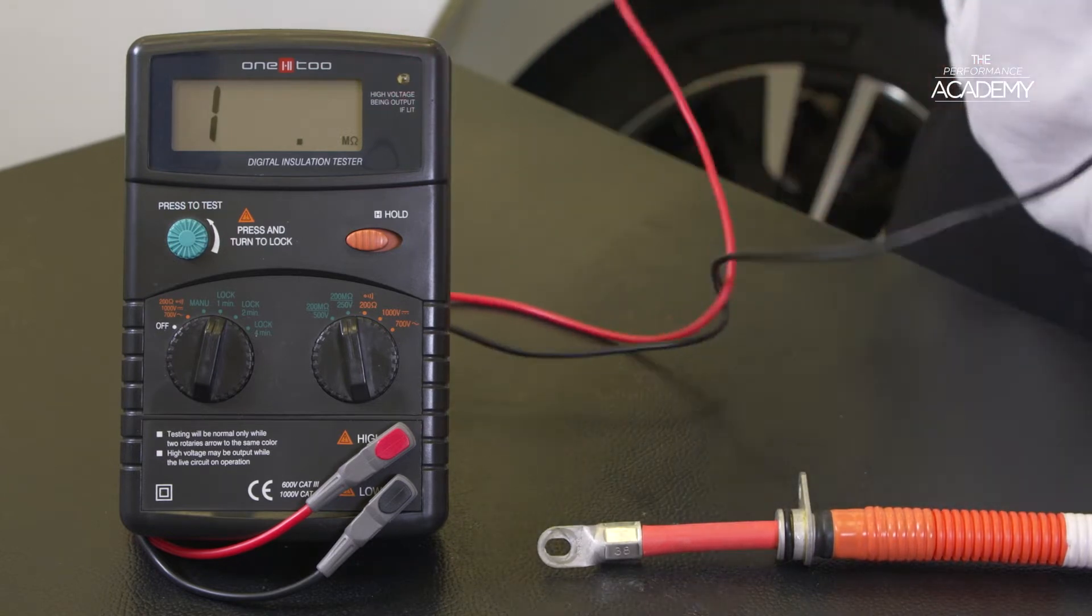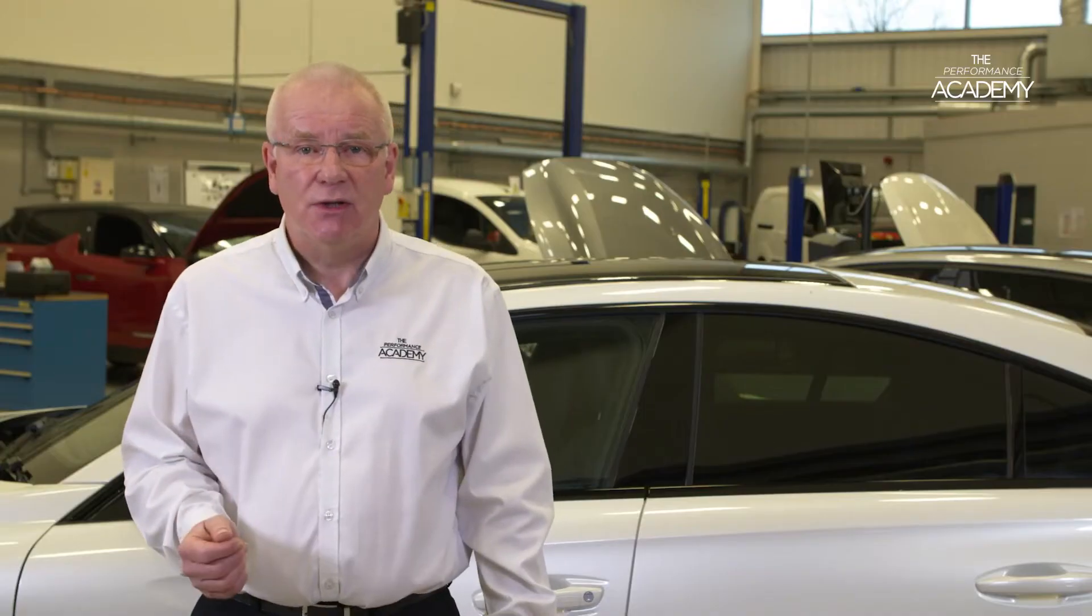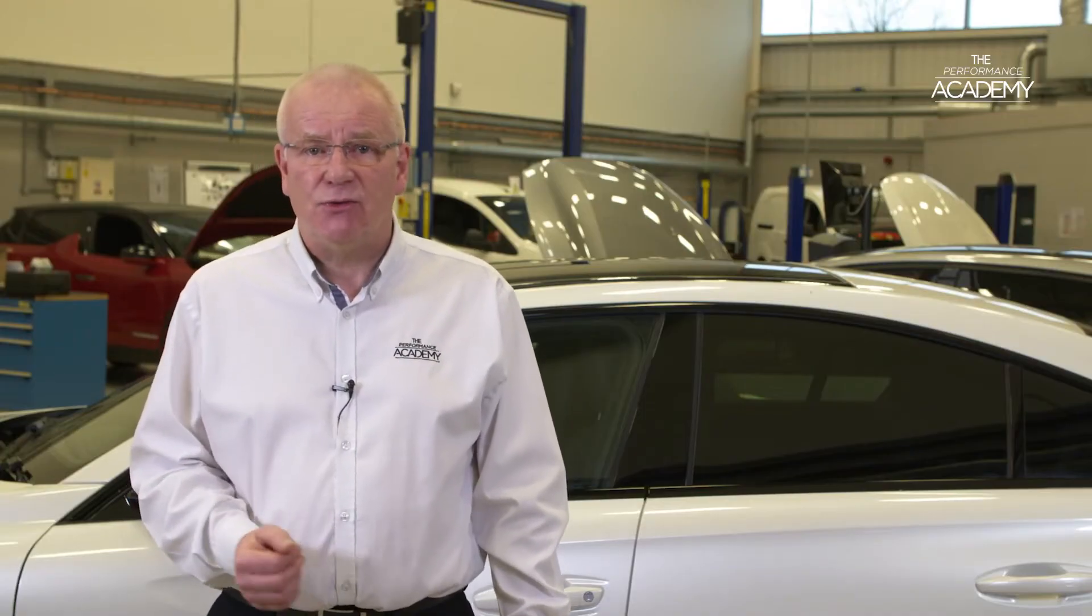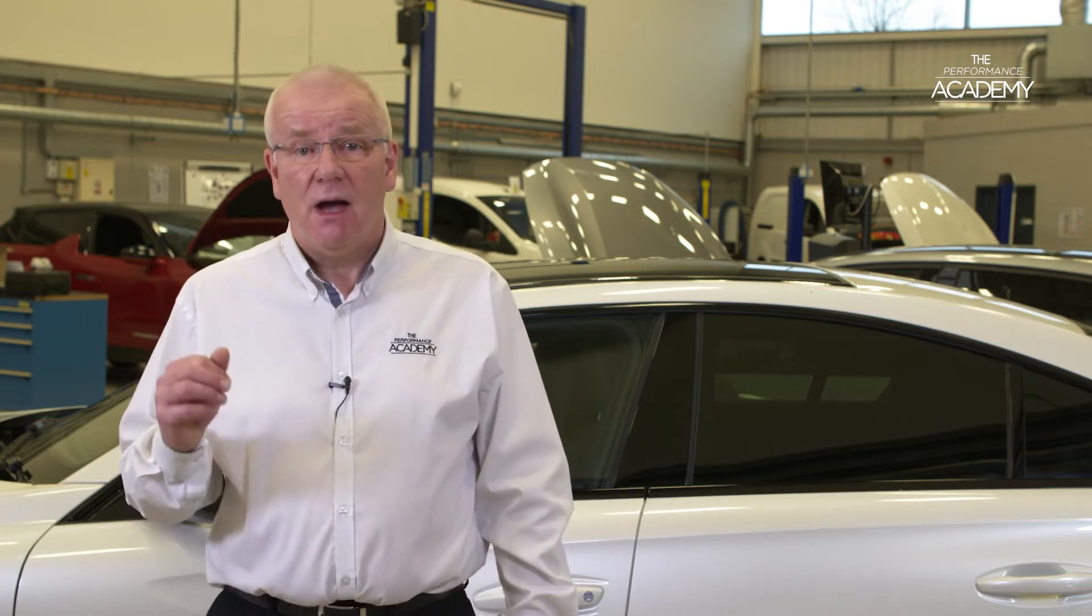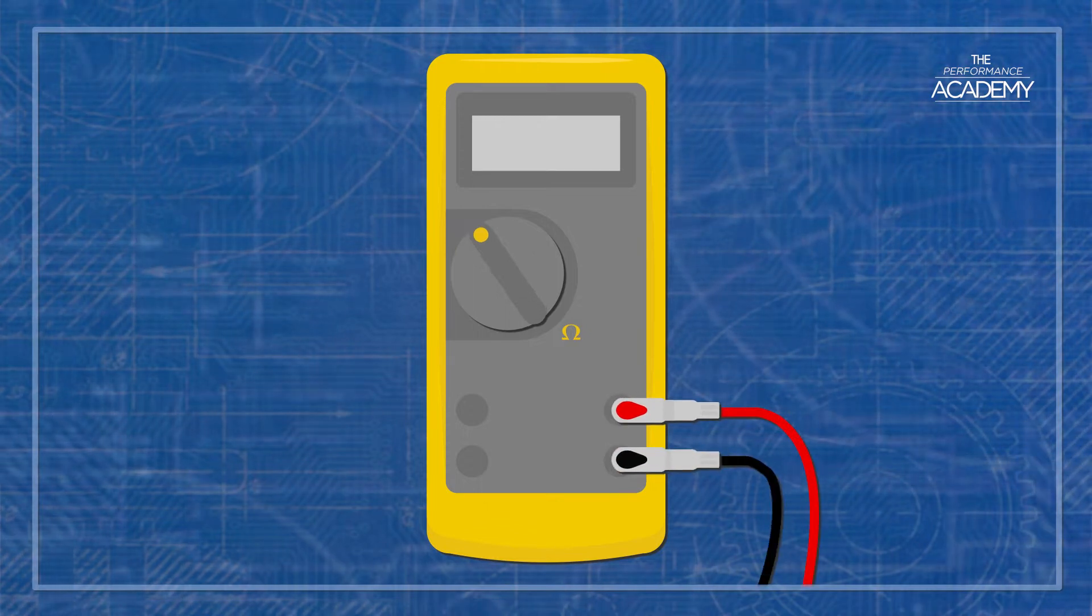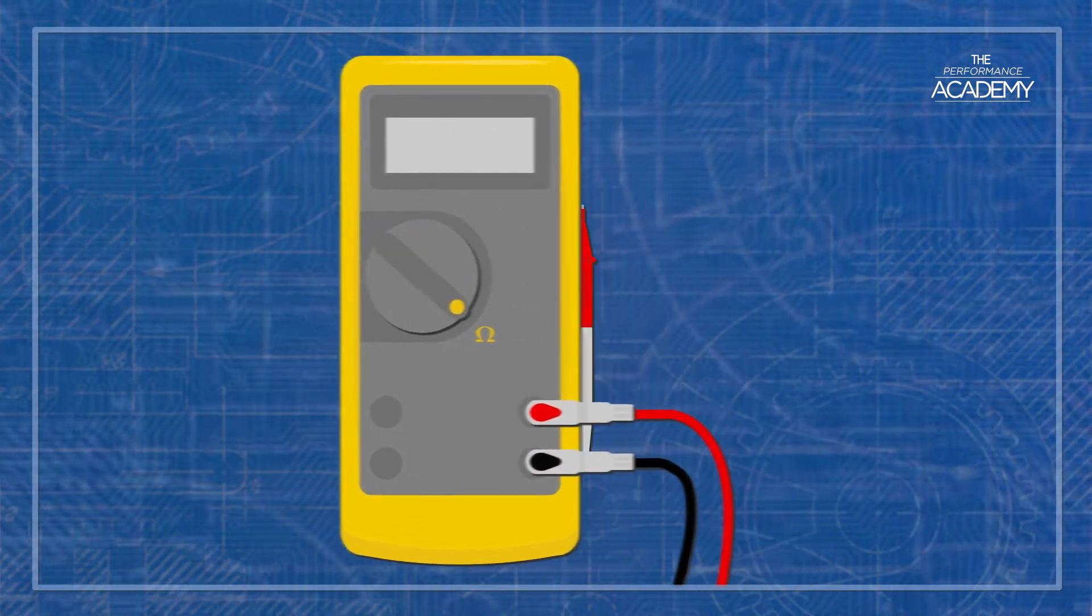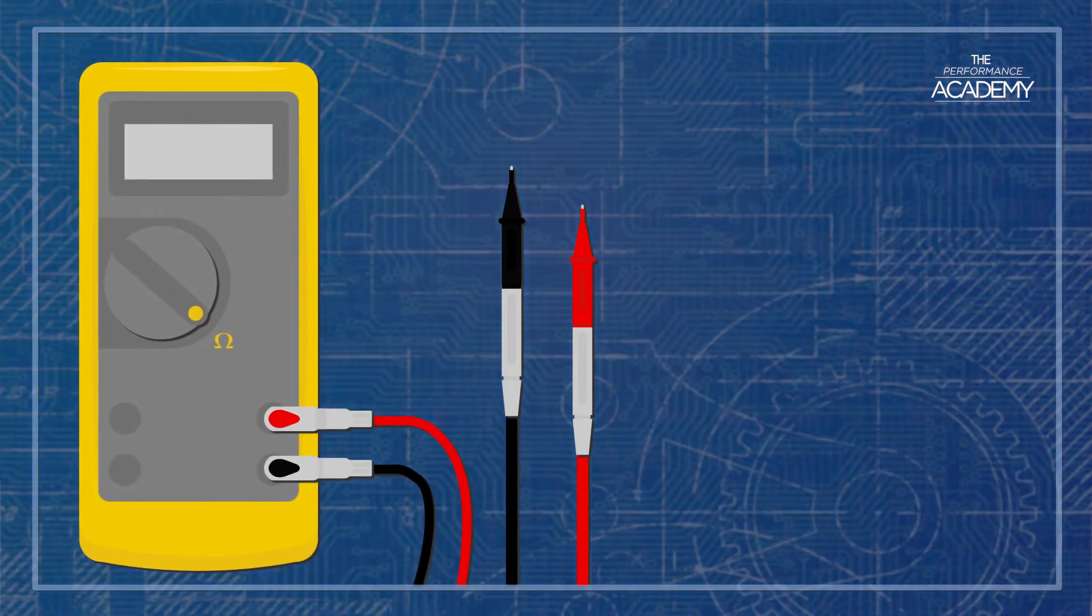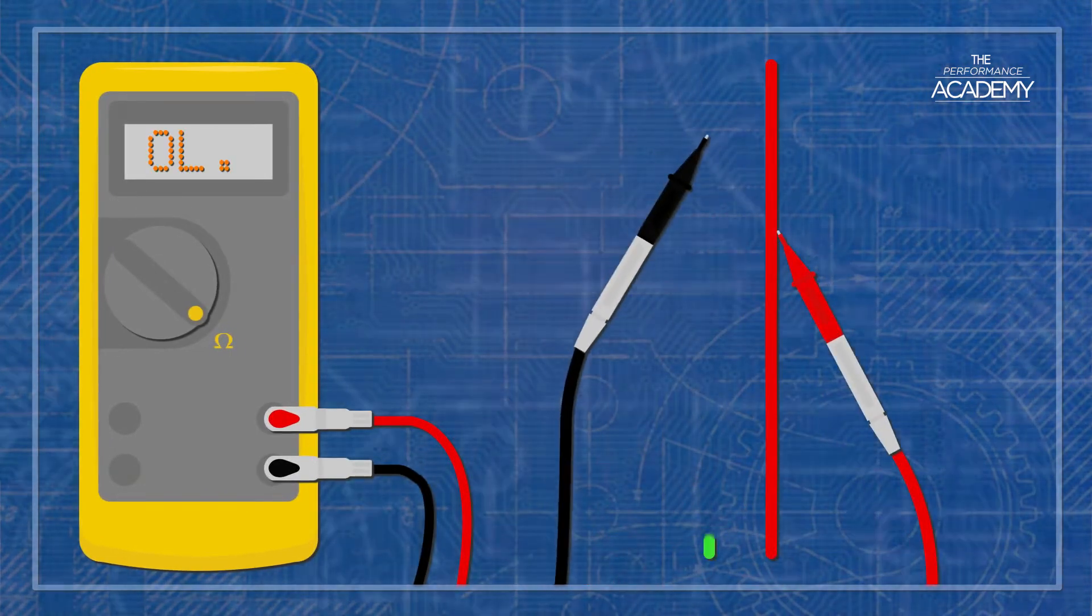To get a better understanding of how an insulation tester works we need to do a bit of electrical theory. An insulation tester works in exactly the same way as a normal multimeter set for resistance testing and then being used to check for an unwanted mutual short between two electrical circuits or cables.